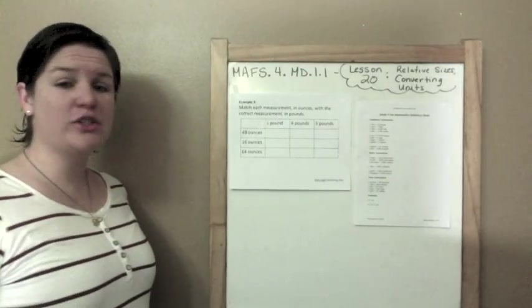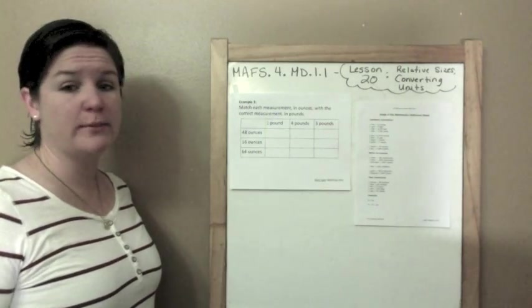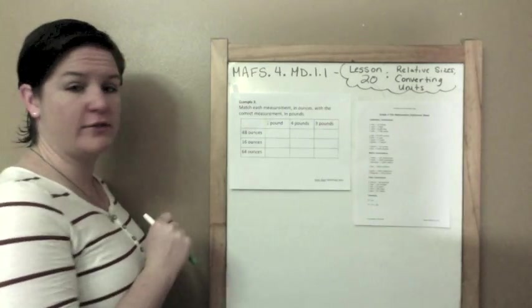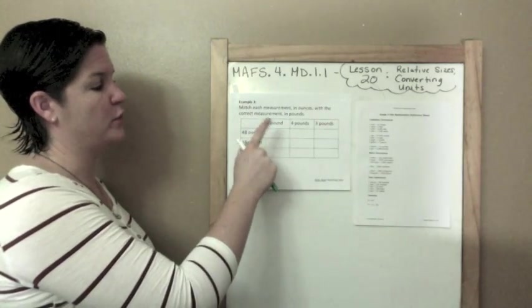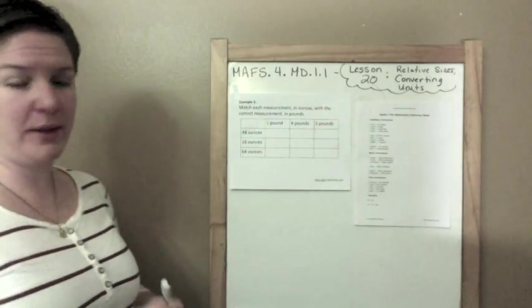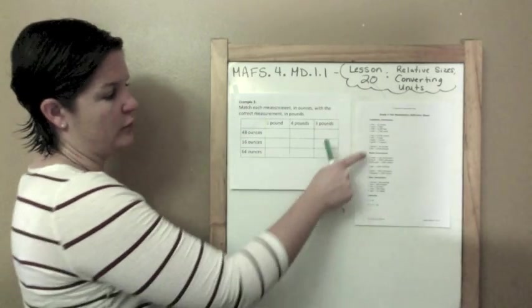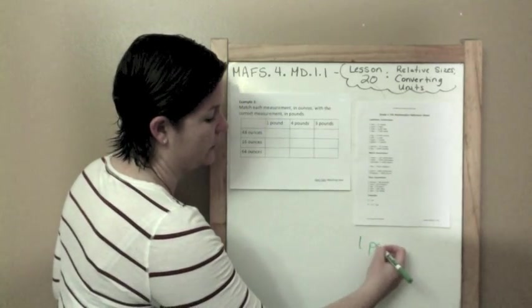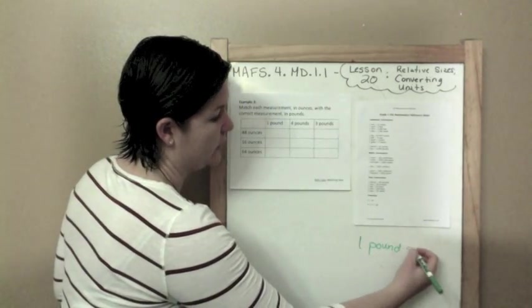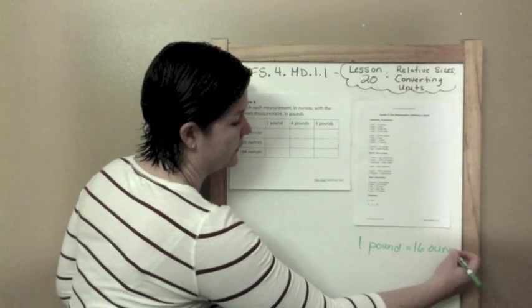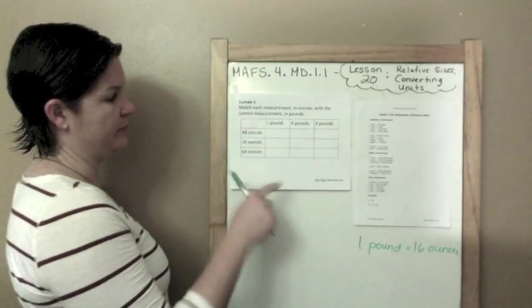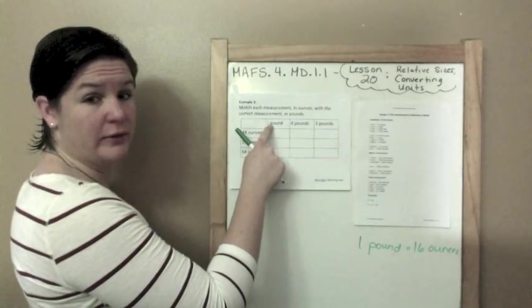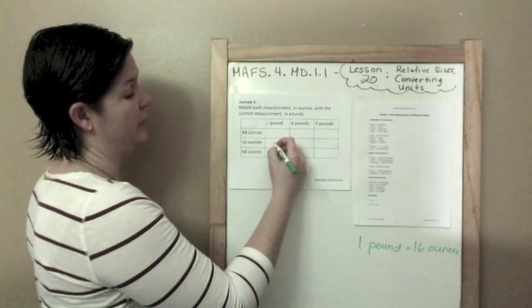Okay, example 3. Match each measurement in ounces with the correct measurement in pounds. So I see 48 ounces, 16 ounces, 64 ounces. I need to match those with 1 pound, 4 pounds, and 3 pounds. So let me use my conversion sheet right here. I see that 1 pound equals, I'm going to write this up here, 1 pound equals 16 ounces. Okay, so 1 pound equals 16 ounces. I can go ahead and do this one.